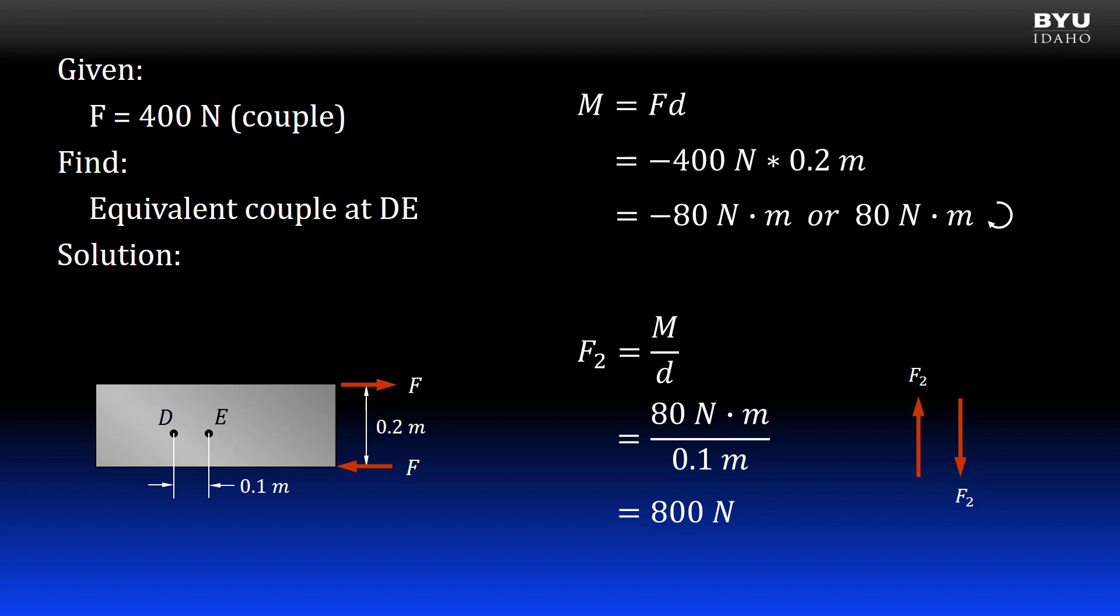So the forces in my equivalent couple will have a magnitude of 800 newtons. To be correct, the direction must also be specified. The equivalent couple will be in the same direction as the original couple, or clockwise, which I could show with a negative sign or a direction arrow.